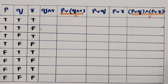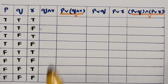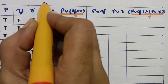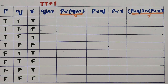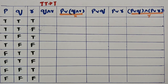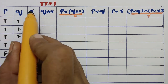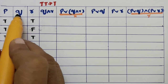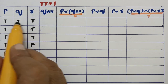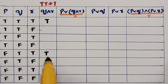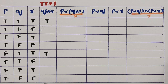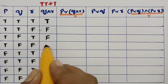Next we compute q and r using conjunction. The logic for 'and' is: if both values are true, write true; otherwise write false. Comparing q and r row by row, we find two rows with true-true, so those get true. The remaining rows are all false.